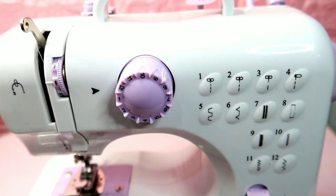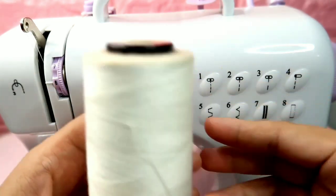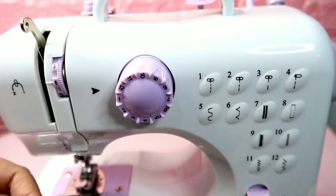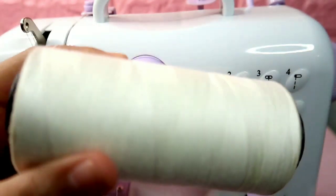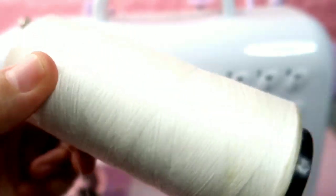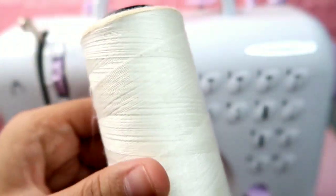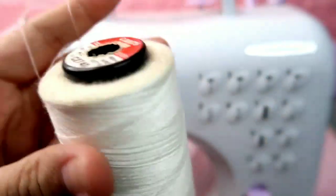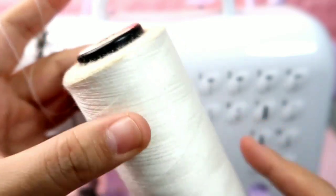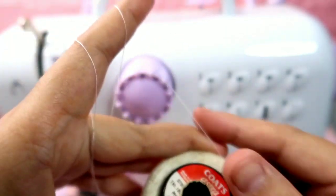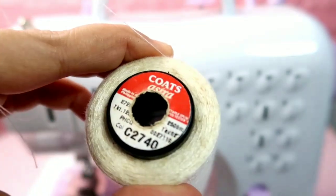For threading, you need thread. Before, I used the thread that came on this spool, but it ran out. So now I'm using this Coats Astra original thread, which you can buy at bookstores. I don't use the cheap ones from tiangge stores because they're too thick and tend to break.